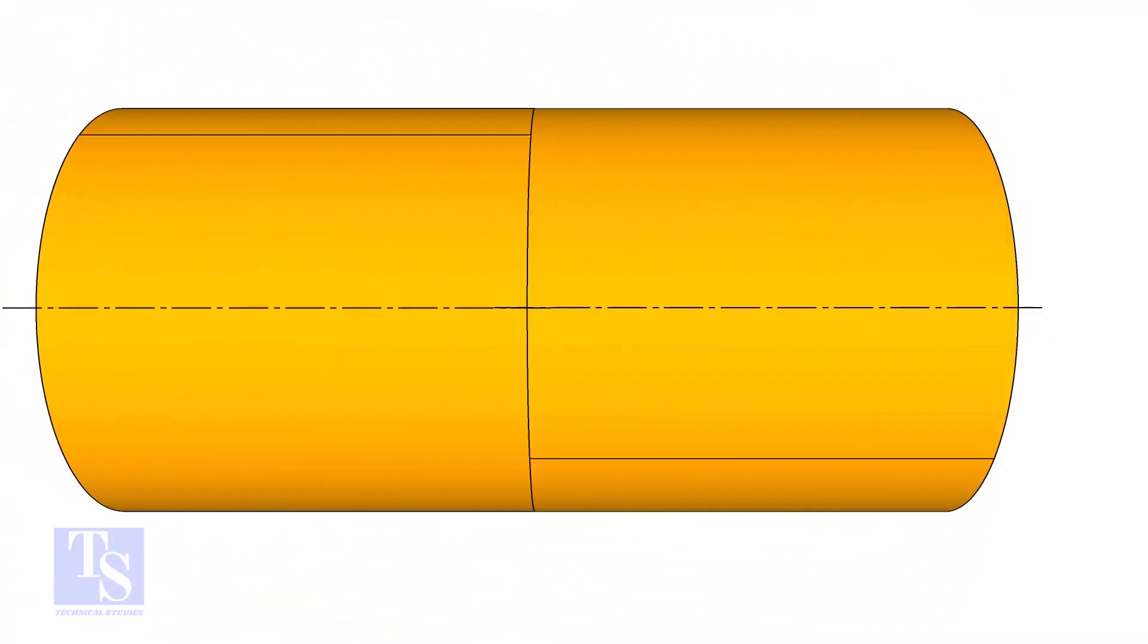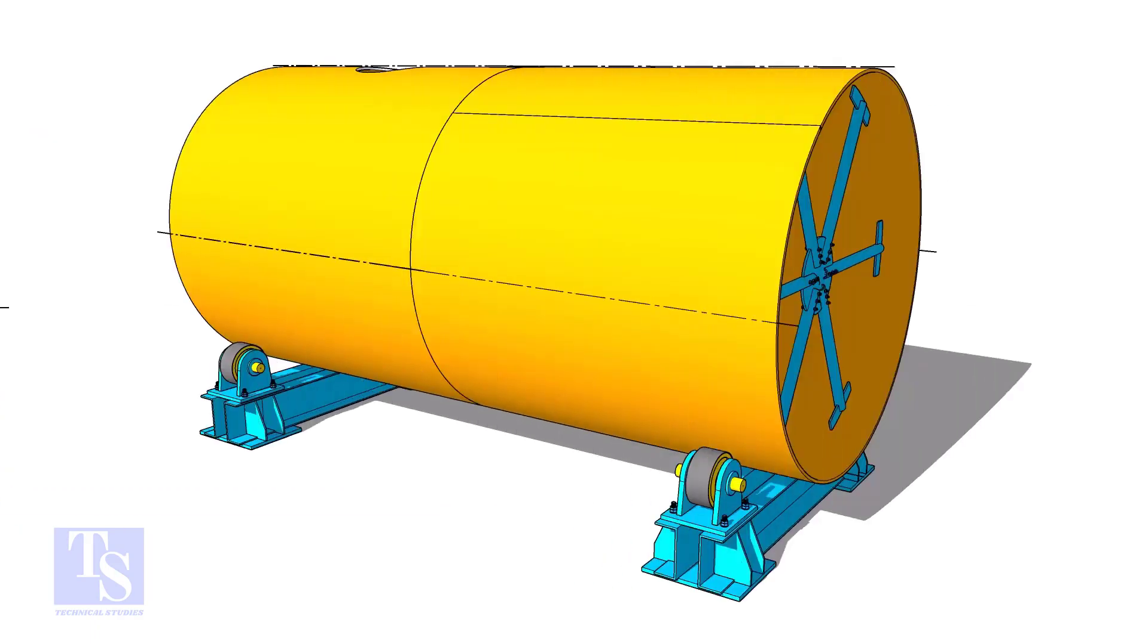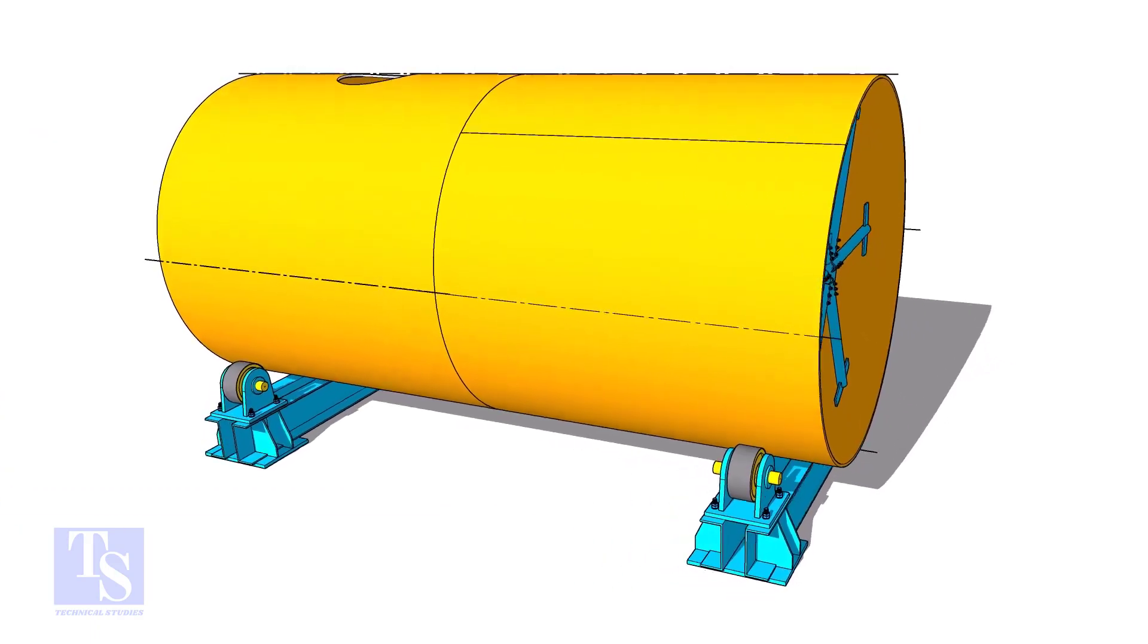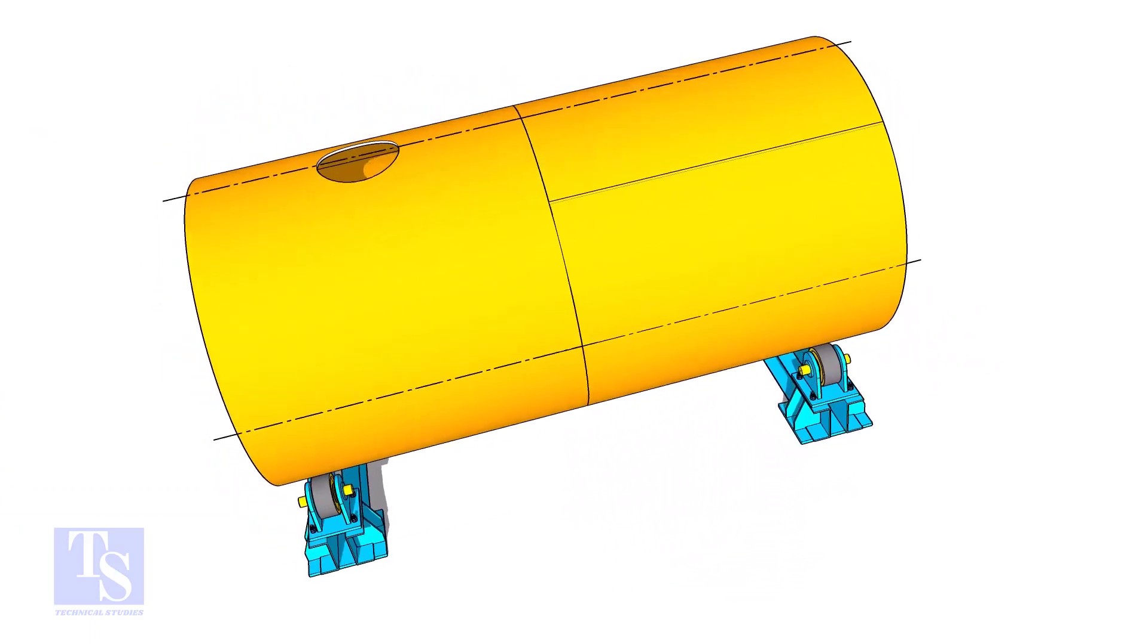Complete the circumseam fit-up and welding. Mark the shell nozzles and manhole openings. Cut the holes and make the bevels.